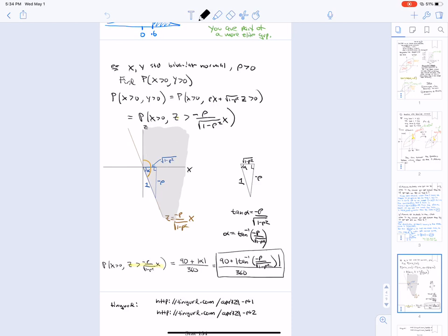So we can do that. And so equivalently we're looking for the probability that x is greater than 0 and z is greater than minus rho over square root of 1 minus rho squared x. Now, x and z are independent.